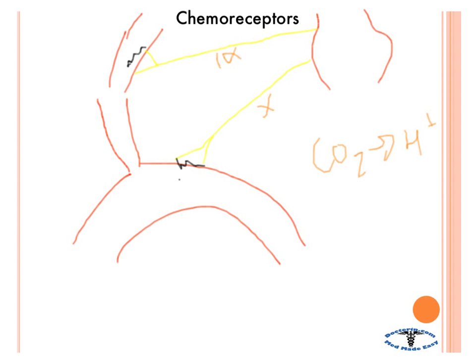You have two peripheral chemoreceptor structures: the aortic body and the carotid body. These send signals about arterial pH and PaO2 to the medullary respiratory center. They are stimulated by low PO2 — the lower the PO2 goes, the more they are stimulated. Conversely, if PO2 rises, they are stimulated less.